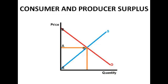Looking at consumer and producer surplus: consumer surplus is basically the amount that a consumer pays less than they would have been prepared to pay. On this diagram, at point B there was somebody prepared to pay price B for the good or service, but instead they're paying price C — the equilibrium price — so the consumer surplus there is ABC. Producer surplus is the amount charged more than what they would have been prepared to charge. You can see they would have been prepared to sell one unit at E, but instead they're selling at price C, giving a producer surplus of ACE.